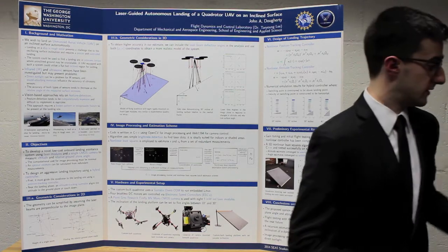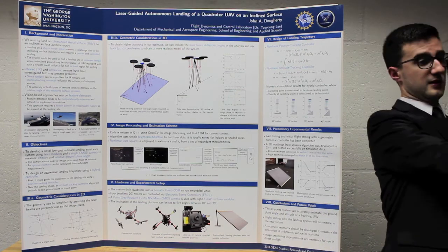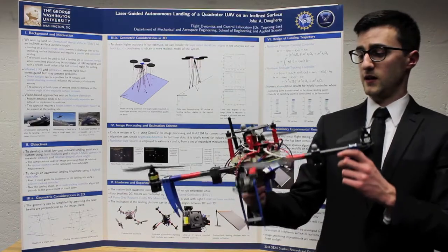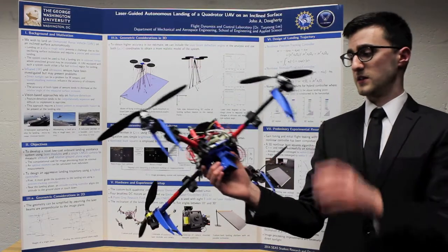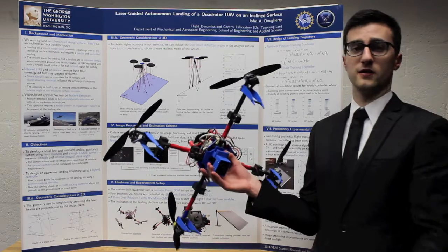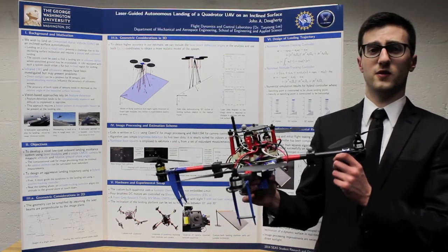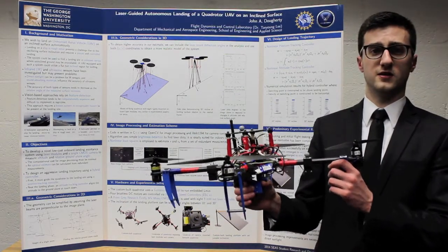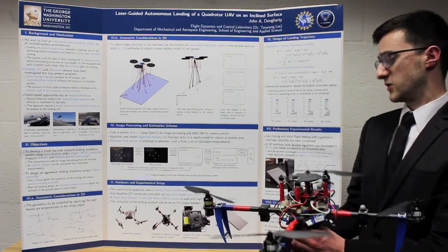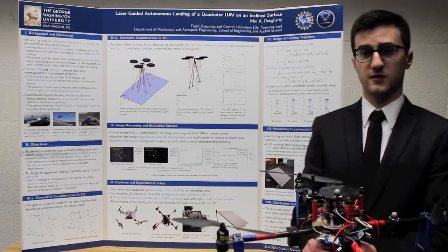My experimental quad rotor is shown here. On the underside, you can see I have a camera along with laser modules. The laser modules are common 5 milliwatt red laser modules, the kind you'd find in any laser pointer. I also built a landing platform with adjustable inclination.